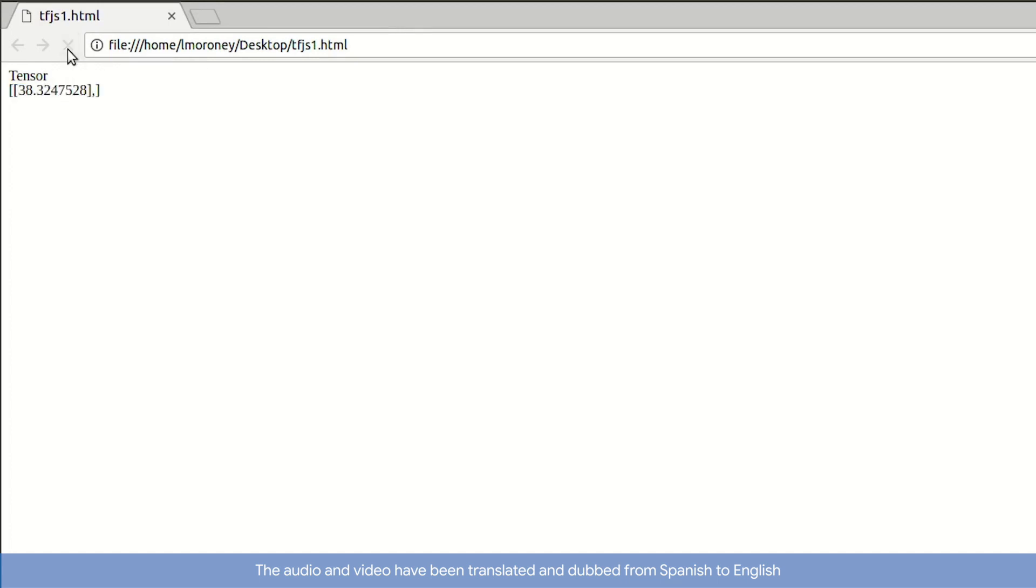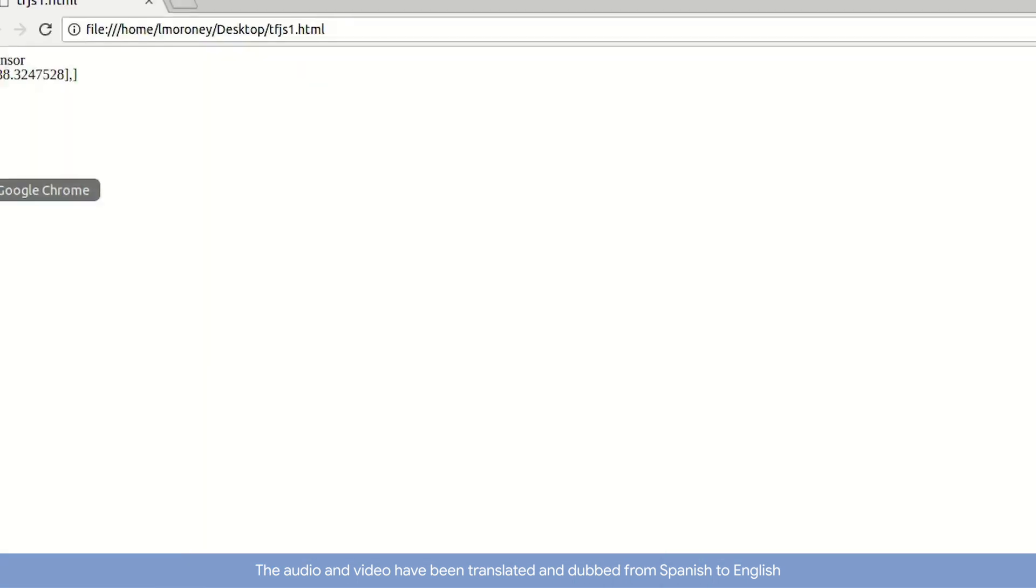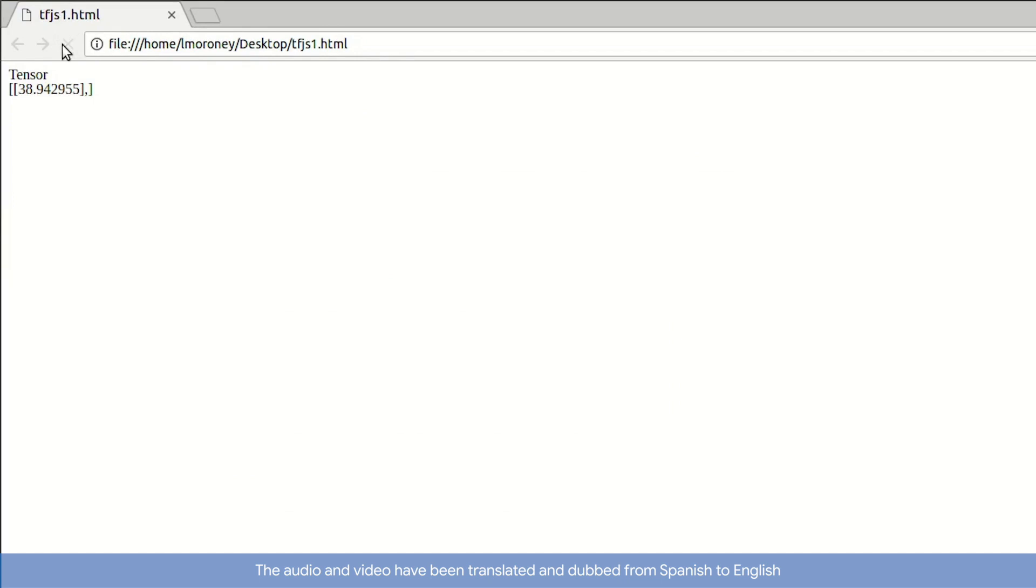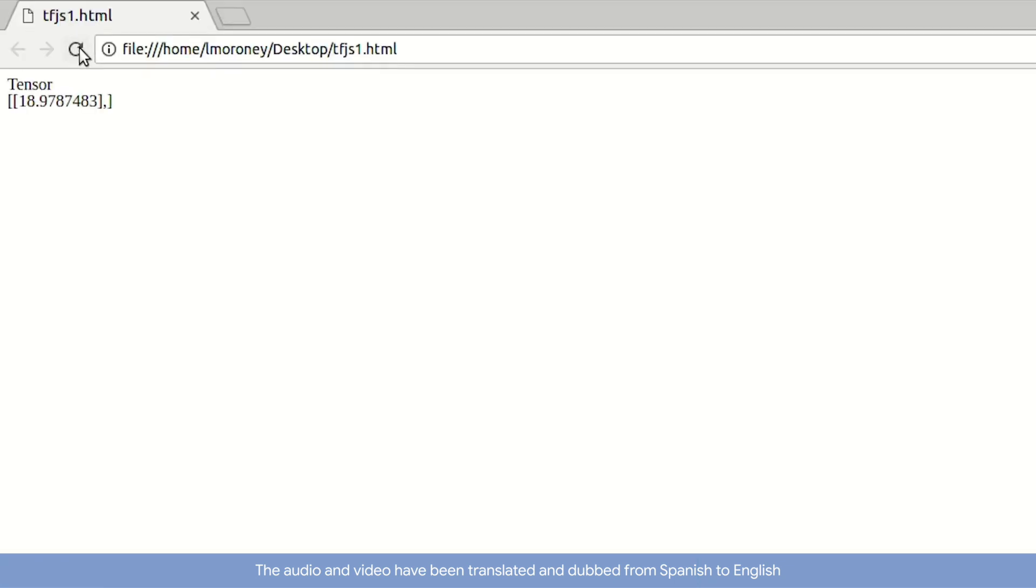If I refresh, the value changes to 38.3 because I've retrained the neural network. I can impact the accuracy by training for more epochs giving the network more time to error correct. Let's make it 500 epochs and when I refresh we see my value is now 38.9 and a refresh keeps it there. Let's also see what it would predict for X equals 10. It gives us 18.97 where the correct value is 19. I refresh and retrain the network and get 18.98.